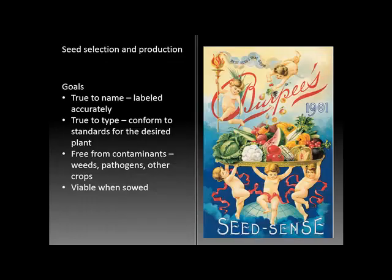Some of the goals of seed selection and production involve several criteria. The first is trueness to name — since seeds are sometimes stored in many batches over a period of time, it's critical that they're labeled completely and accurately for the needs of both the seed producer and the grower. The second criterion is trueness to type: that the plants coming out of those seeds will conform to the standards required for that plant.